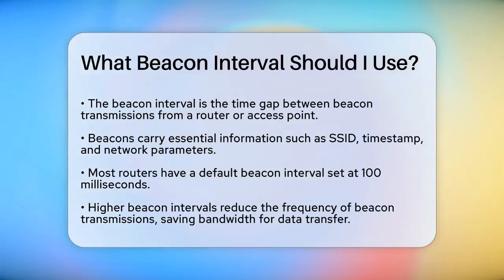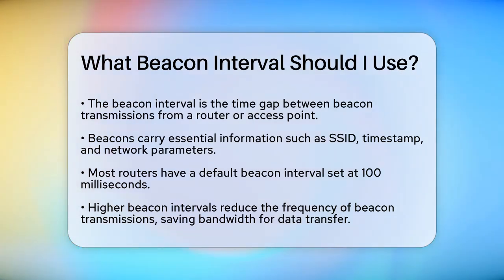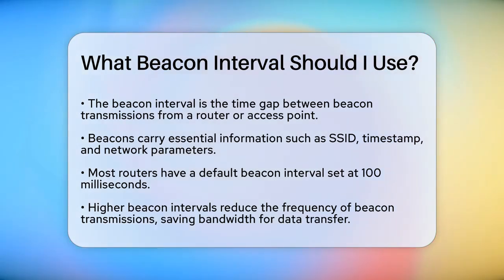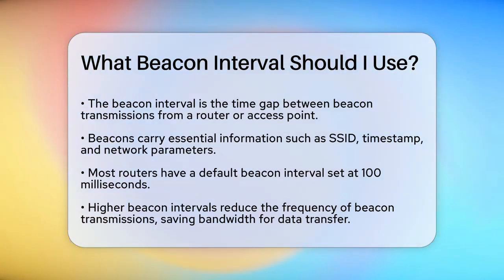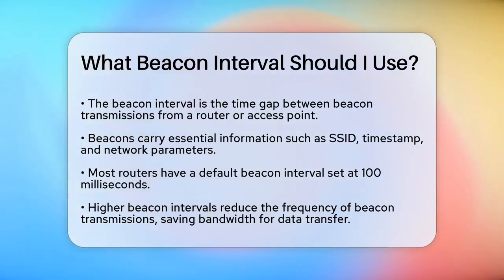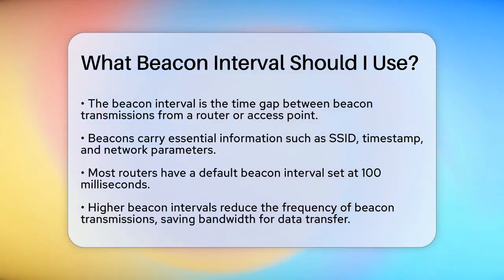First, what is a beacon interval? It's the time gap between each beacon transmission sent by your router or access point. This beacon includes essential information like the SSID, timestamp, and various network parameters that help your devices connect to the network. The default beacon interval for most routers is set at 100 milliseconds, but this might not always be the best setting for your specific situation.